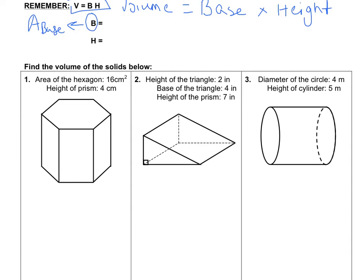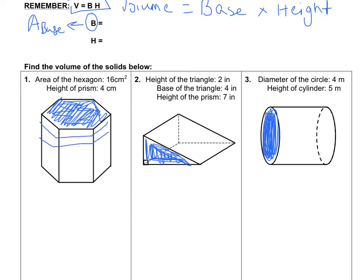The base is the slice of our solid. When we look at problems 1, 2, and 3, we can see that the base is the hexagon in number 1, the right triangle in number 2, and in the cylinder in number 3, it is the circle. We know this is the base because we can slice each one of our solids along this base an infinite number of times, and it will always produce that same base.